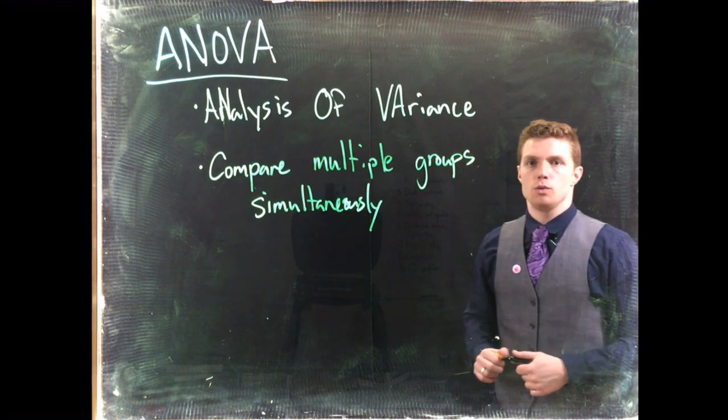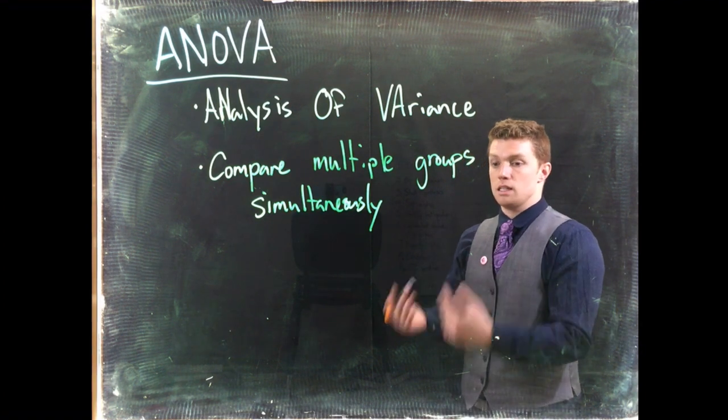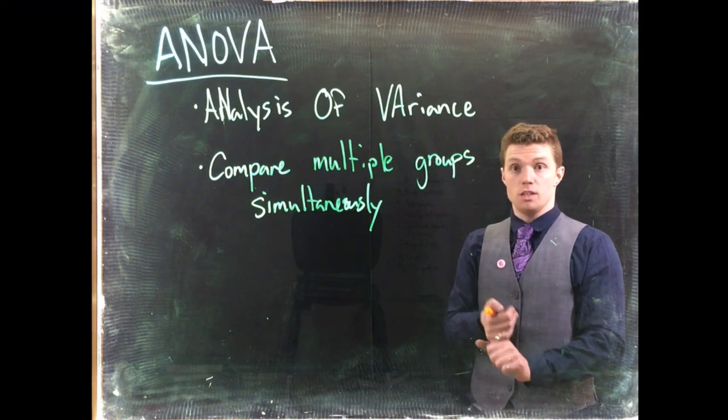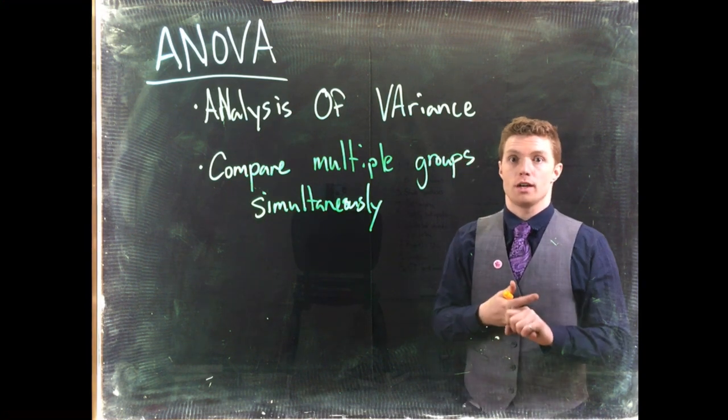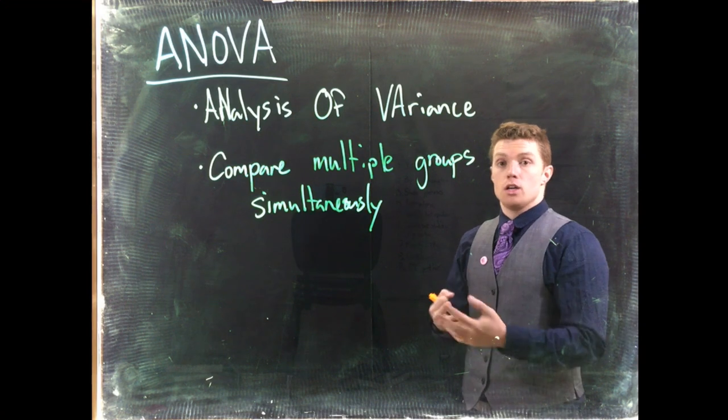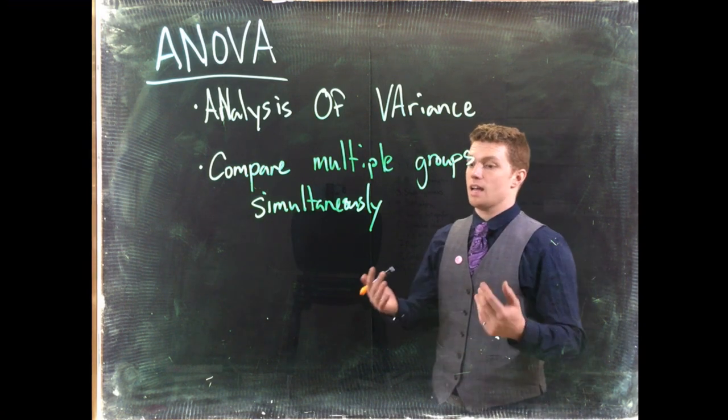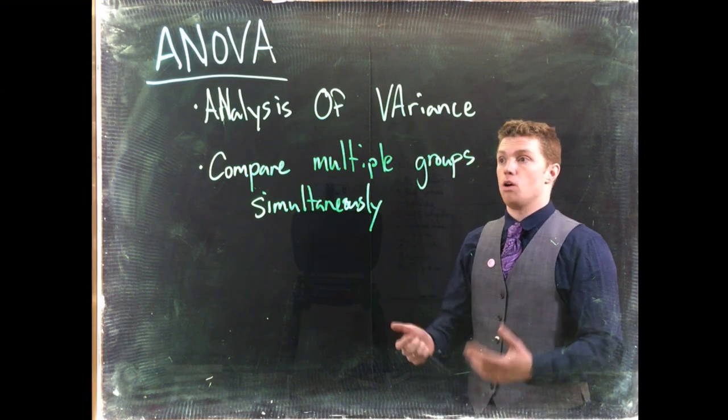What happens if we're a pharmaceutical company and want to test three things against each other at the same time? Like we have a placebo group, a treatment group, and a competitor's brand we're trying to compare. We could do three separate tests, but that's kind of a waste of time. We could actually compare them all together at the same time with ANOVA.